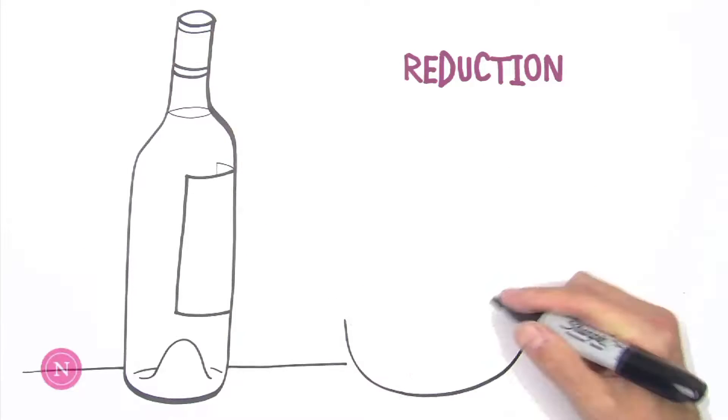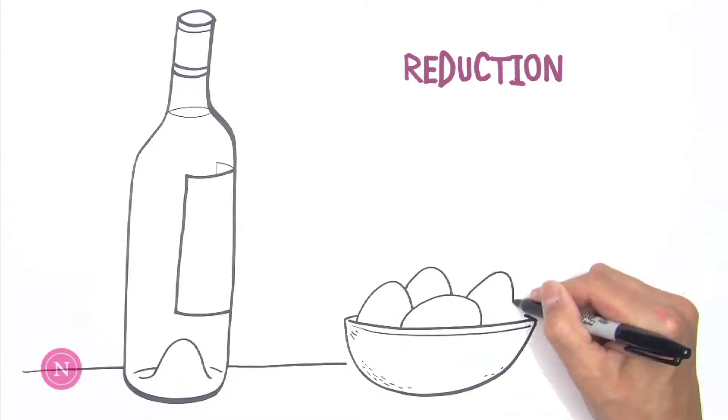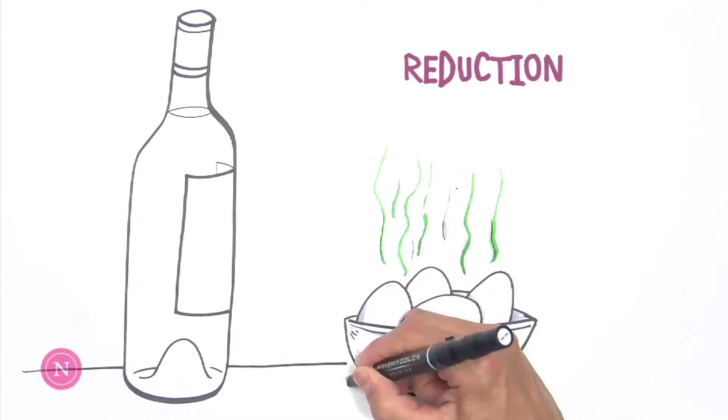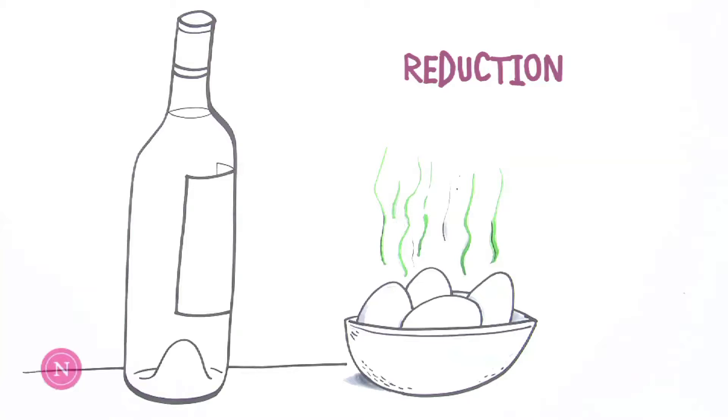One type of wine fault, reduction, occurs when a wine does not receive enough oxygen during the winemaking or aging process. This can cause unfavorable aromas, such as sulfur or rotten eggs, and can often be attributed to tightly sealed closures like screw caps.